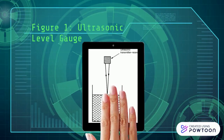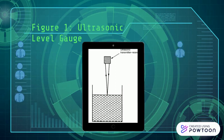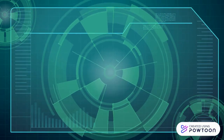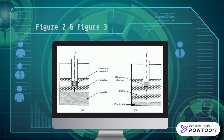Measurement of the time of flight allows the liquid level to be inferred. In alternative versions, the ultrasonic source is placed at the bottom of the vessel containing the liquid and the time of flight between emission. A brief explanation: the ultrasonic transmitter produces a signal, then the signal will bounce back after hitting a solid or liquid surface, then return to the ultrasonic transmitter.